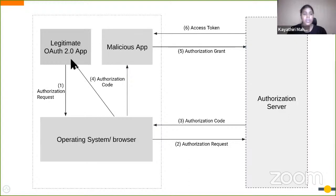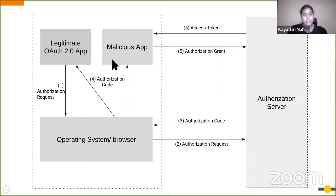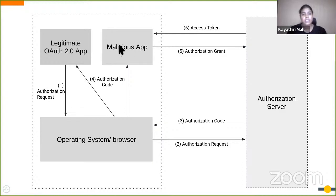In this scenario, when your client application initializes the authorization request and sends it to the authorization server, once it responds with the authorization code to the redirection URL, both applications are registered under the same redirect URL. So there is a chance that the malicious app gets the authorization code. In that case, the malicious application can exchange the code for a token via the token endpoint and get the access token, allowing it to access protected resources like private documents or images.